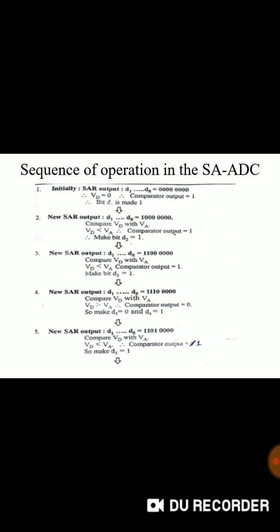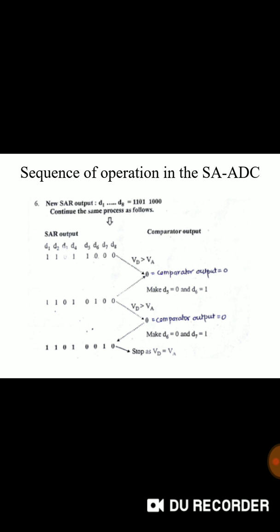If VD is less than VA comparator output will be 1. If it is greater than VA it will be 0 output. Successive approximations like this. We are dealing with SAR output and comparator's output.